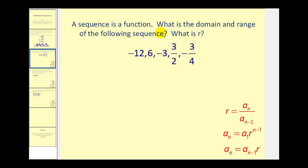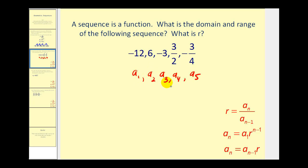A sequence is a function, so therefore it has a domain and a range. The values of n represent the domain, and the terms in the sequence represent the range. So this is a sub one, a sub two, a sub three, a sub four, and a sub five — telling us that n is equal to one, two, three, four, and five in this sequence.